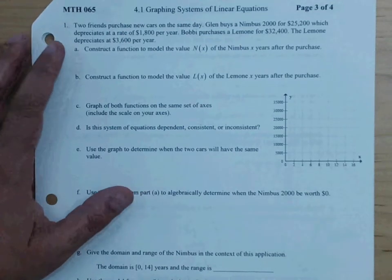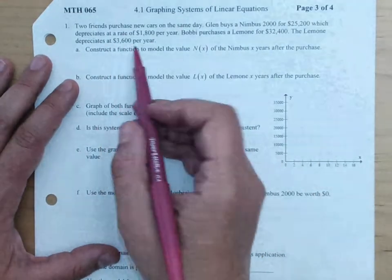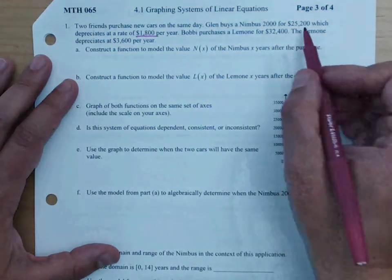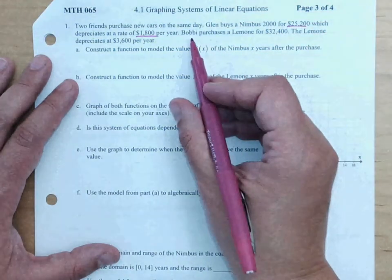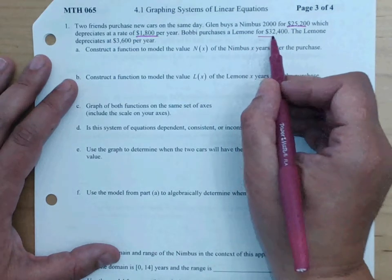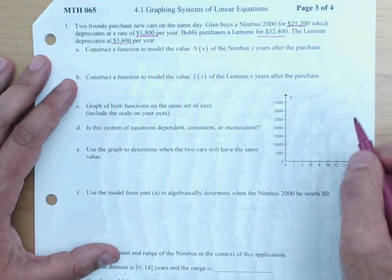Two friends purchase new cars on the same day. Glenn buys a Nimbus 2000 for $22,200, which depreciates at a rate of $1,800 per year. Bobby purchases a Limone for $32,400. It depreciates $3,600 per year.